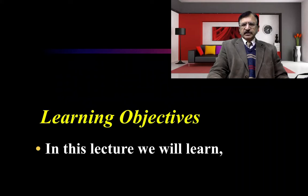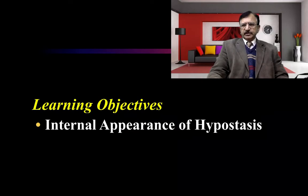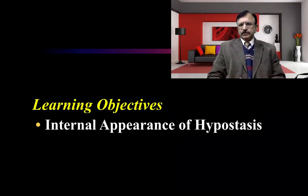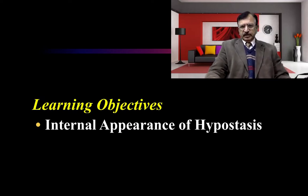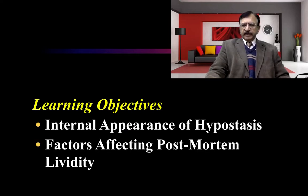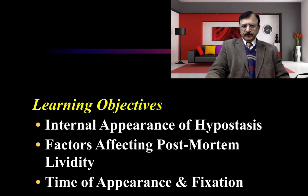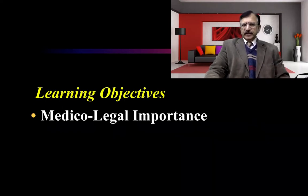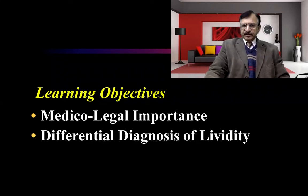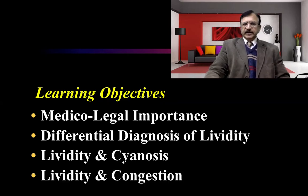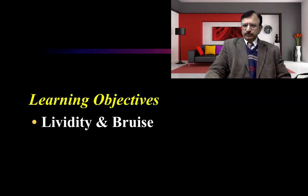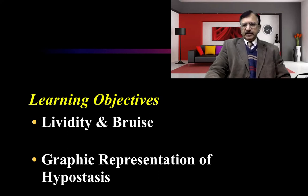The learning objective of this lecture is that we learn the internal appearance of hypostasis. In the previous lecture, we discussed hypostasis visible externally on the skin of the dependent region. Now we will discuss the internal appearance and the factors which can modify post-mortem lividity, the time of appearance and fixation, the medico-legal significance, and its differential diagnosis — conditions which simulate post-mortem staining, such as lividity and cyanosis, lividity and congestion, and lividity and bruise. Then we will discuss the graphic representation of hypostasis.